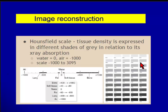Looking at CT windows: in soft tissue window versus bone window, you can see the definition of the cortex — the outer and inner cortex and the marrow — much more clearly on bone window. If you don't window it properly, you will miss bone lesions. If you report SPECT-CT but don't change your windows, you will miss all bone lesions; and if you report soft tissue only, you will miss a lot of disease.